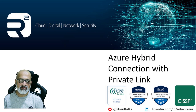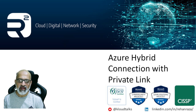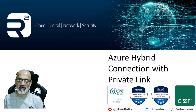First, let's demystify the term hybrid connection. Imagine you have critical data and applications hosted both in your on-premise infrastructure and on the cloud. Connecting these two environments seamlessly while ensuring data security can be challenging. This is where hybrid connections come into play — they allow you to establish a secure and reliable communication channel between an on-premise network and cloud resources.